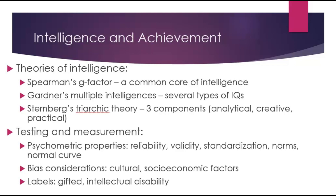When measuring intelligence, psychometric properties assess how good and useful a psychological test is. There's controversy around reliability, validity, standardization, norms, and norm curves, as well as bias considerations — if you're not from the same culture the test is administered in, there could be cultural and socioeconomic biases. Ultimately, IQ tests may produce labels such as gifted or intellectually disabled.